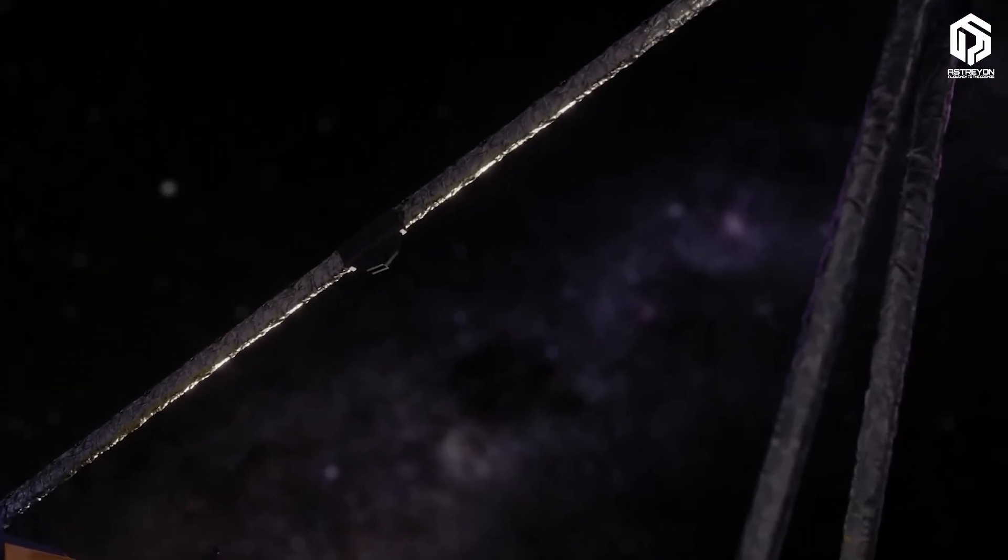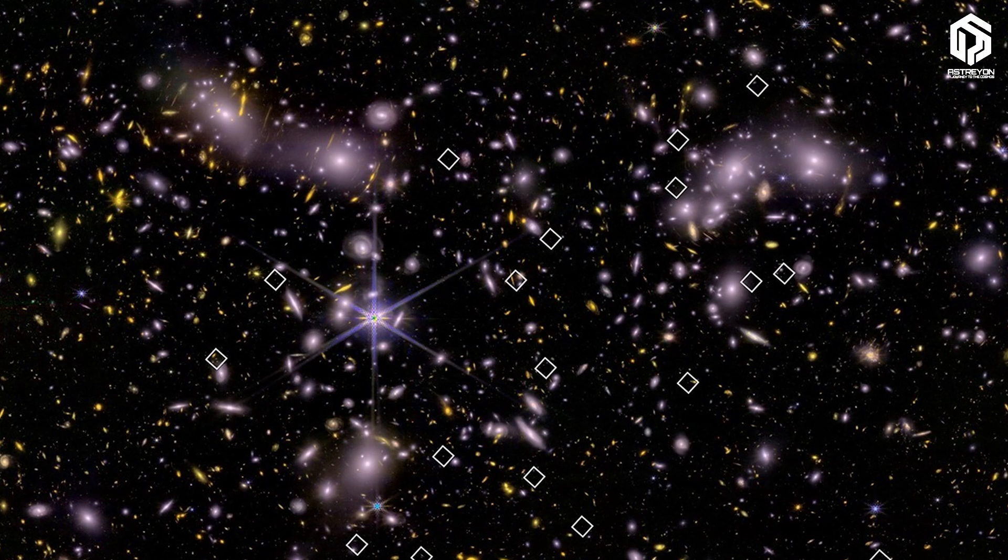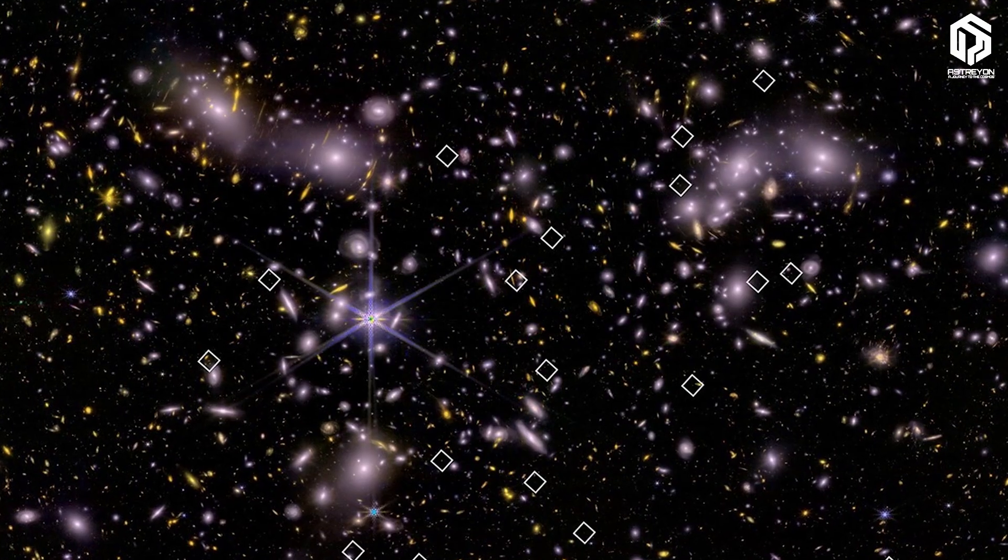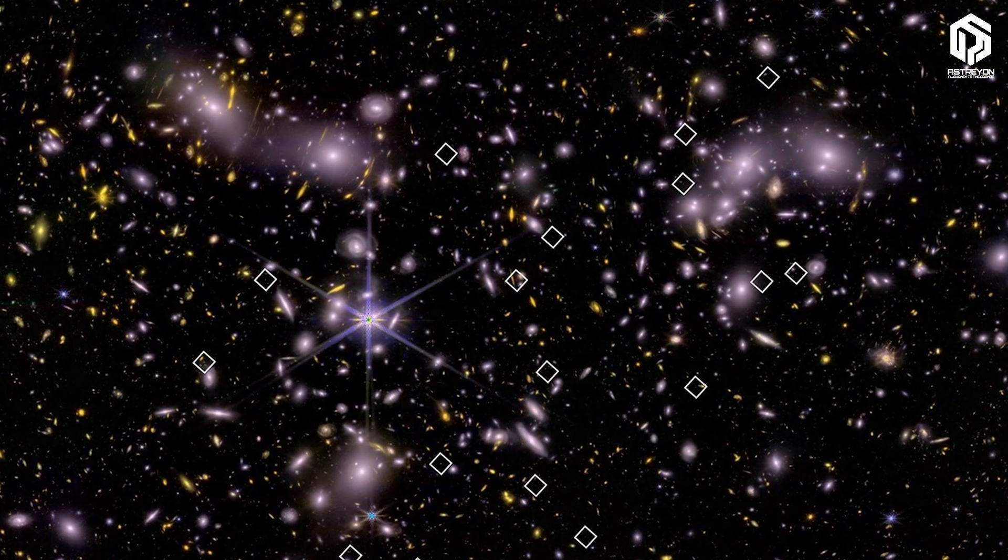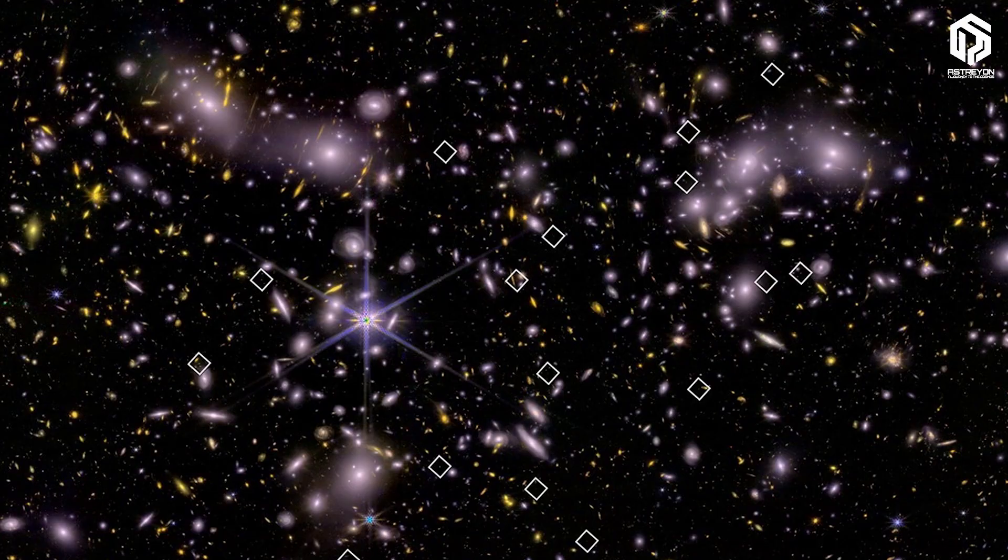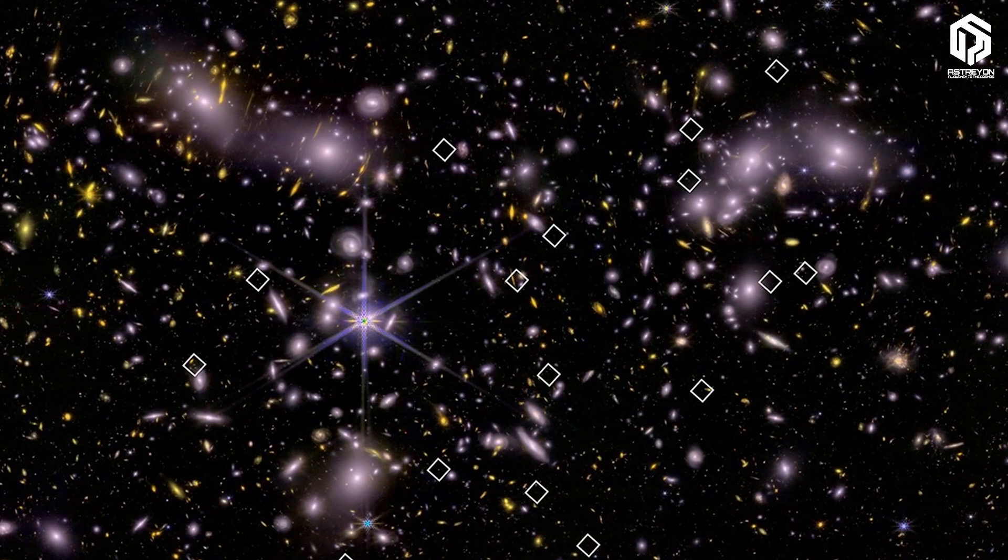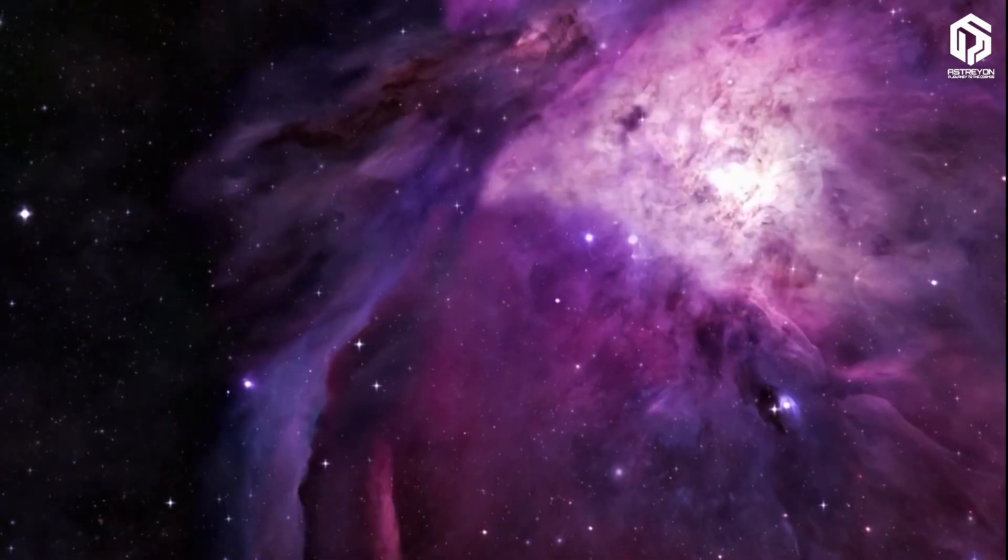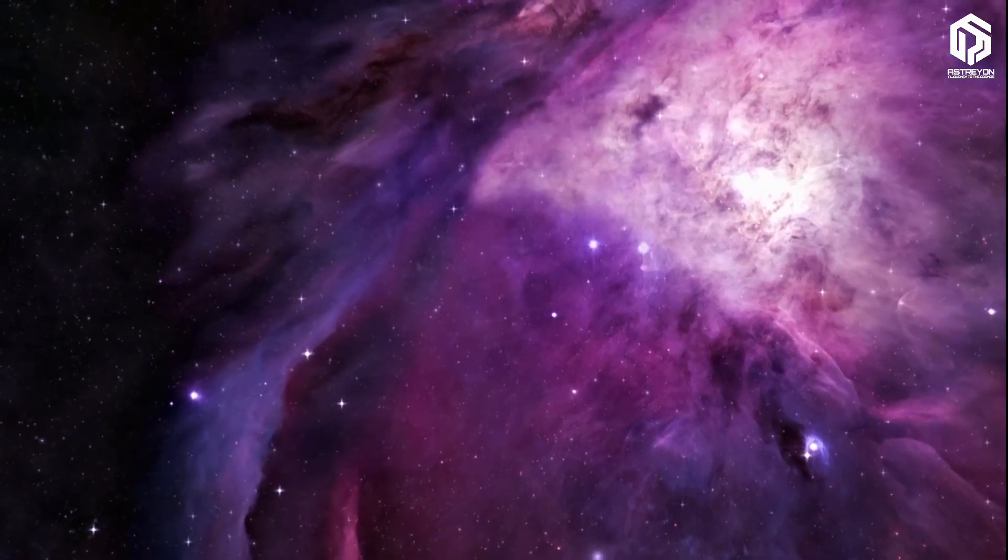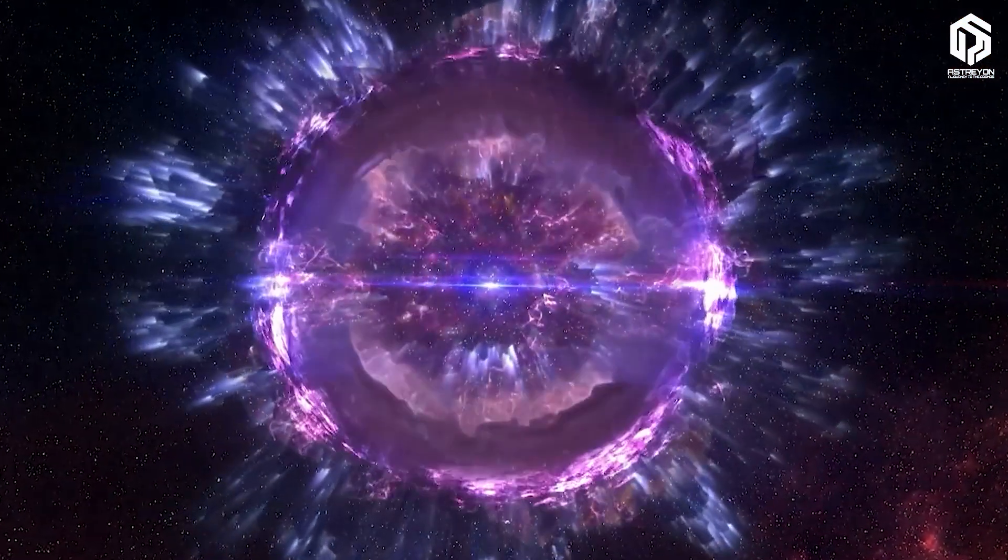Also in the Uncover program, JWST identified dozens of small galaxies that played a key role in reionization 800 million years after the Big Bang. These starburst galaxies with stellar explosions acted like tiny cosmic engines clearing the fog.